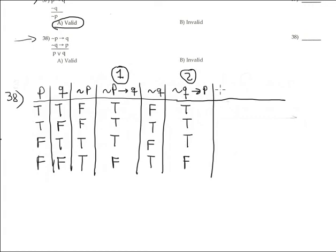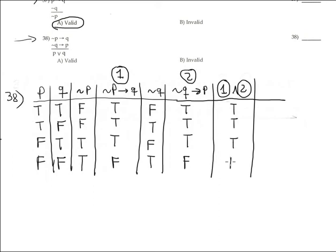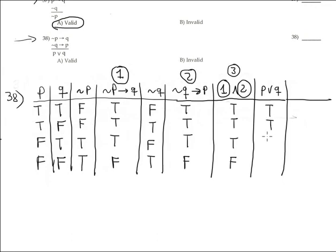Now the extra column is the conjunction of premise 1 and premise 2 put together. The conjunction between columns one and two gives: true, true, true, true, and false. The conclusion is disjunction P or Q — it's true whenever at least one input is true: true, true, true, and this is the only false case.